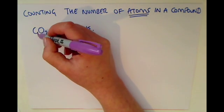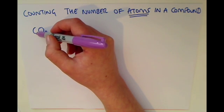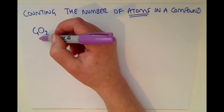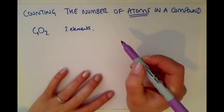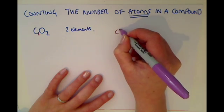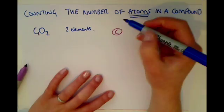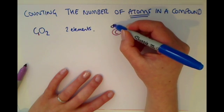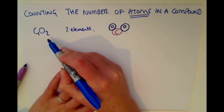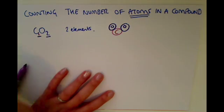So if there is no number next to the element, you should assume that there is one atom of that element in the compound. So if we were to draw CO2, just to help our understanding, it would be one atom of carbon bonding to two atoms of oxygen because you have got a number two there and no number here which means there is only one of them.